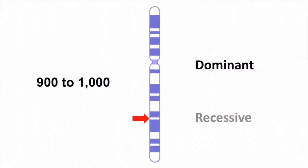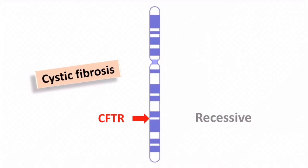The arrow indicates a gene known as CFTR. It is a recessive gene. Mutation in this gene is responsible for a clinical disorder known as cystic fibrosis. I think now you can understand what is meant by single gene disorder.